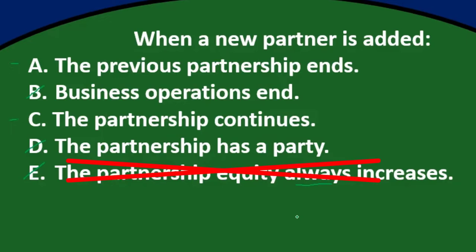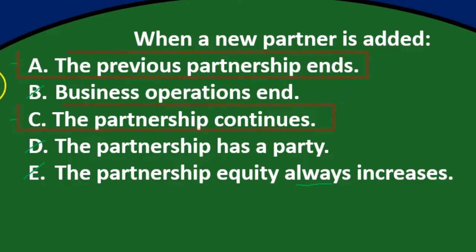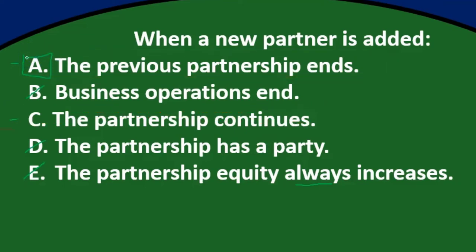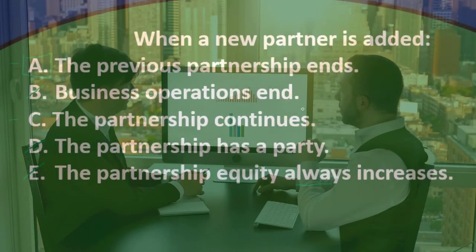So we're down to A and C because they are opposites and E is eliminated by the word 'always.' When a partner is added, either the previous partnership ends or the partnership continues. This seems counterintuitive, but the correct answer is actually A — the previous partnership ends. Even though operations will continue, that's the technical answer.